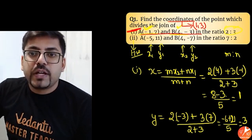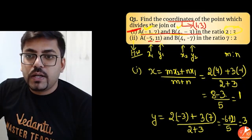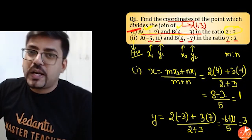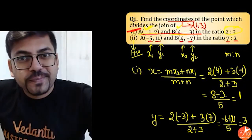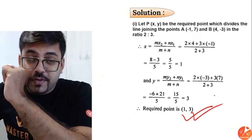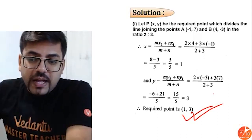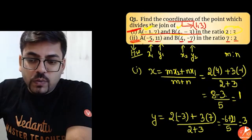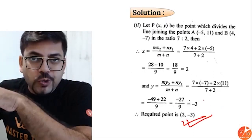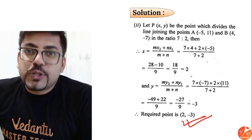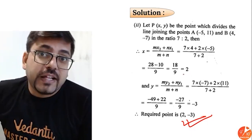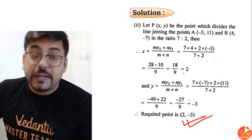Exactly the same way you can do the second one as well, because you have X1, Y1, X2, Y2 and the M is to N ratio — just put it in the formula. The answer for the second one, which you have to do as homework, is 2 comma minus 3. I request all of you to kindly take a snapshot and solve question number 2 on your own, and tally whether you are getting the same answer.